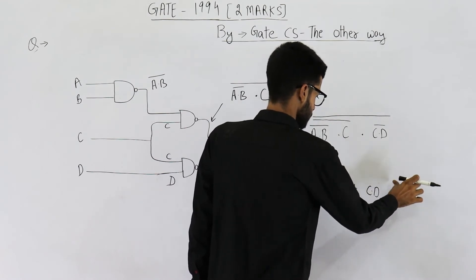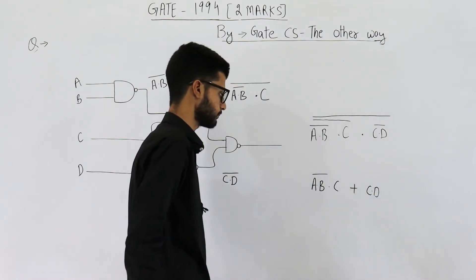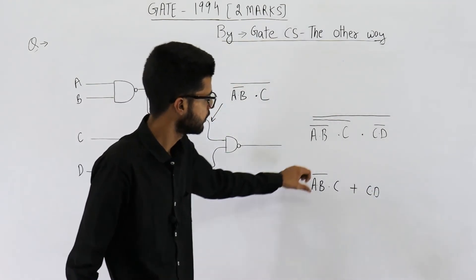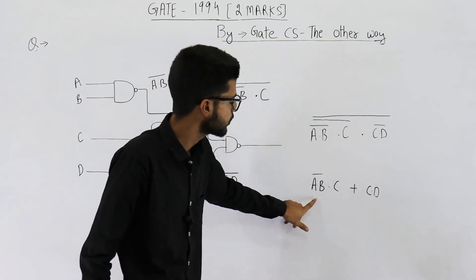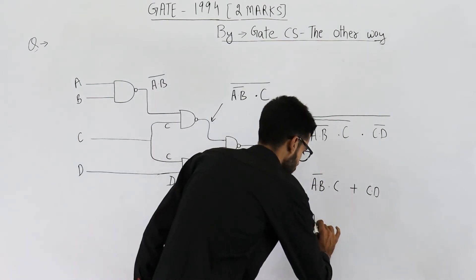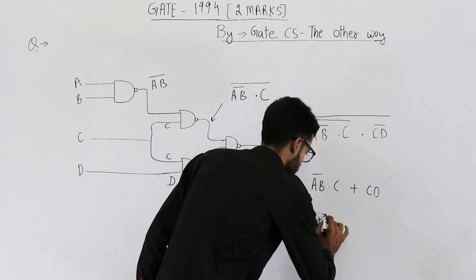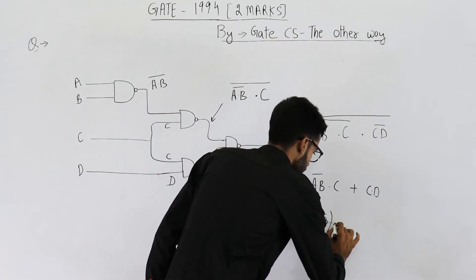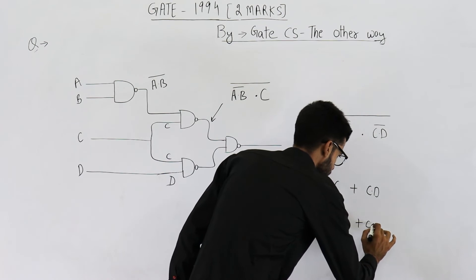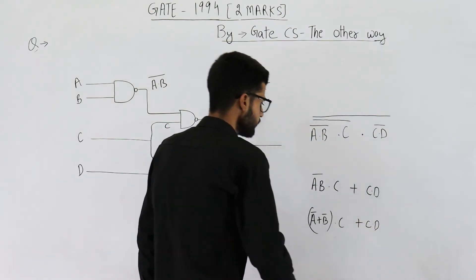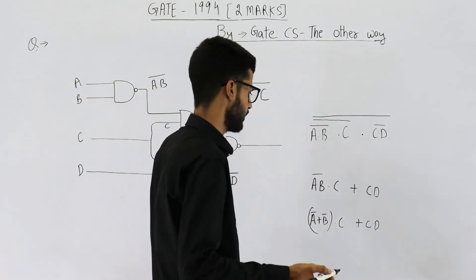Okay, that means you will be getting this. Let's solve it ahead. You just apply De Morgan's law here also. That will be a complement plus b complement dot c, plus c dot d. Now just open this bracket.